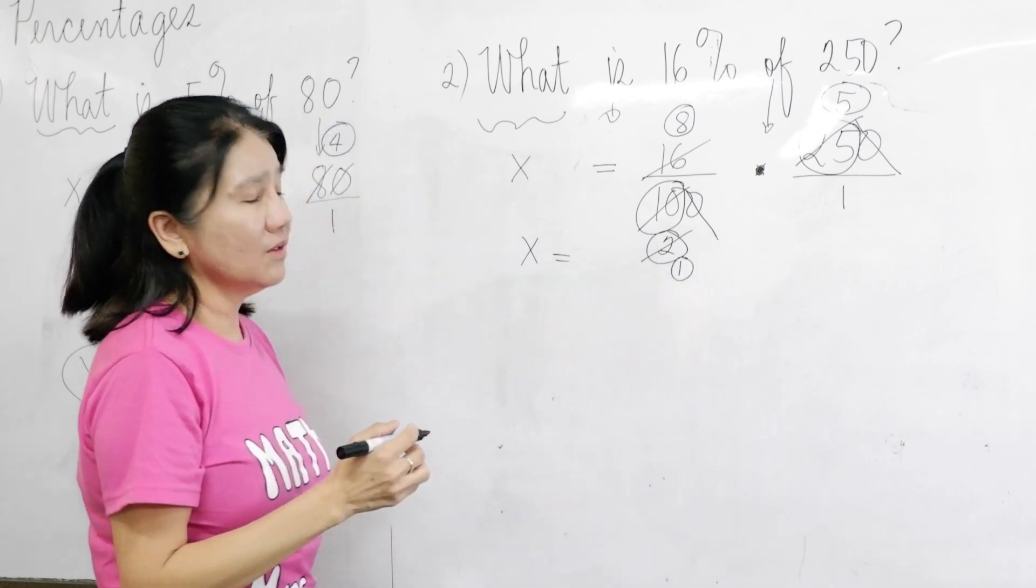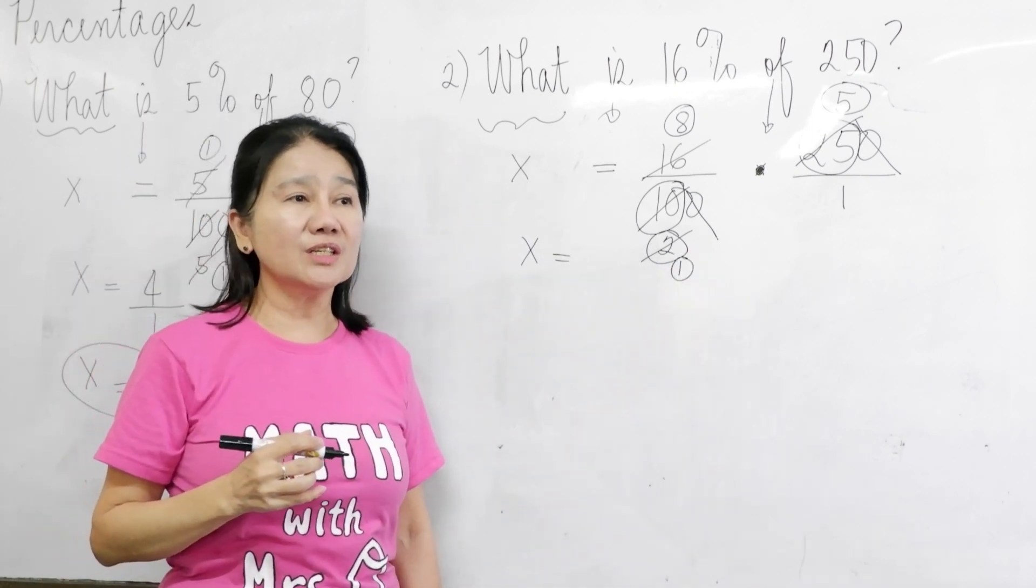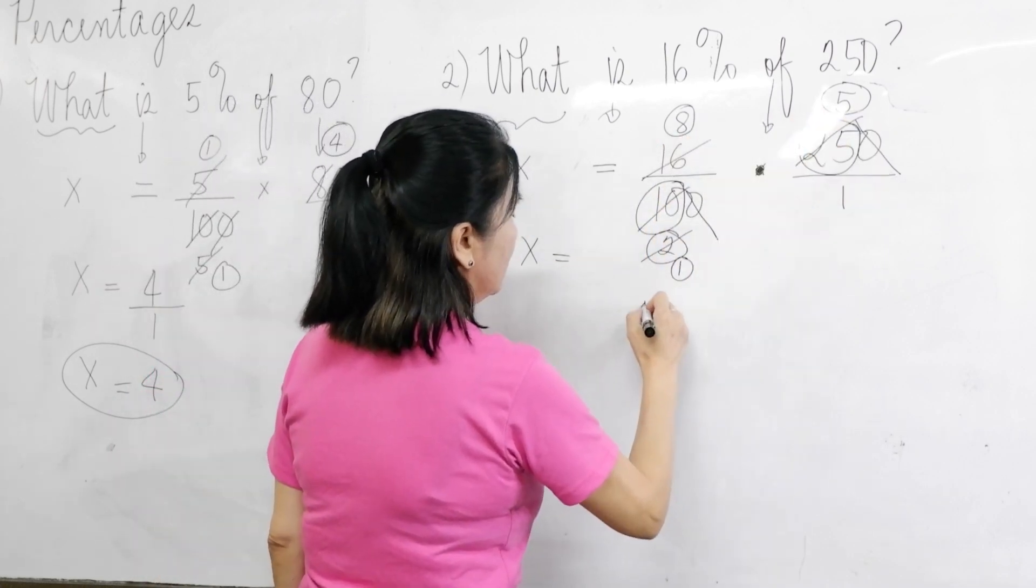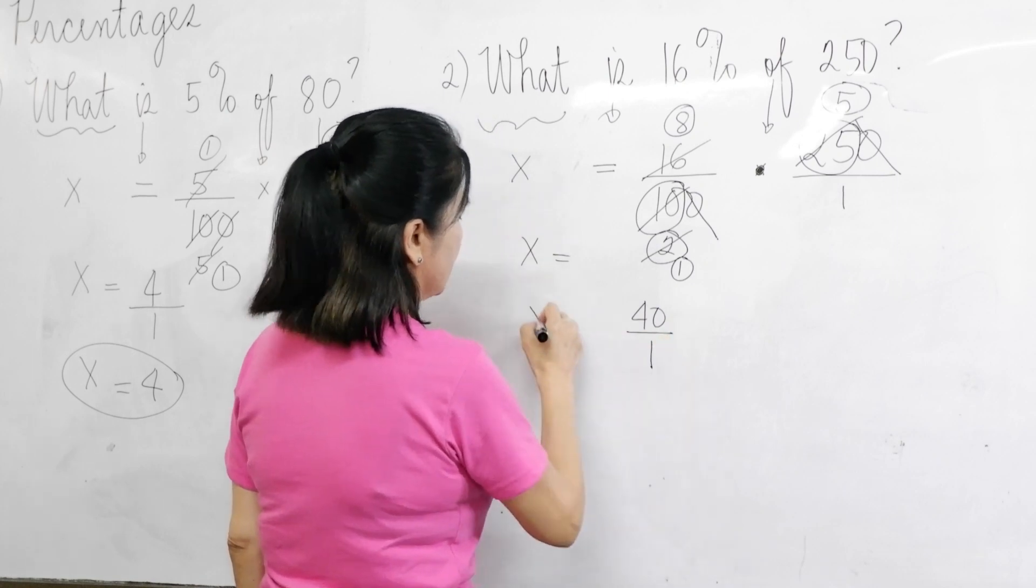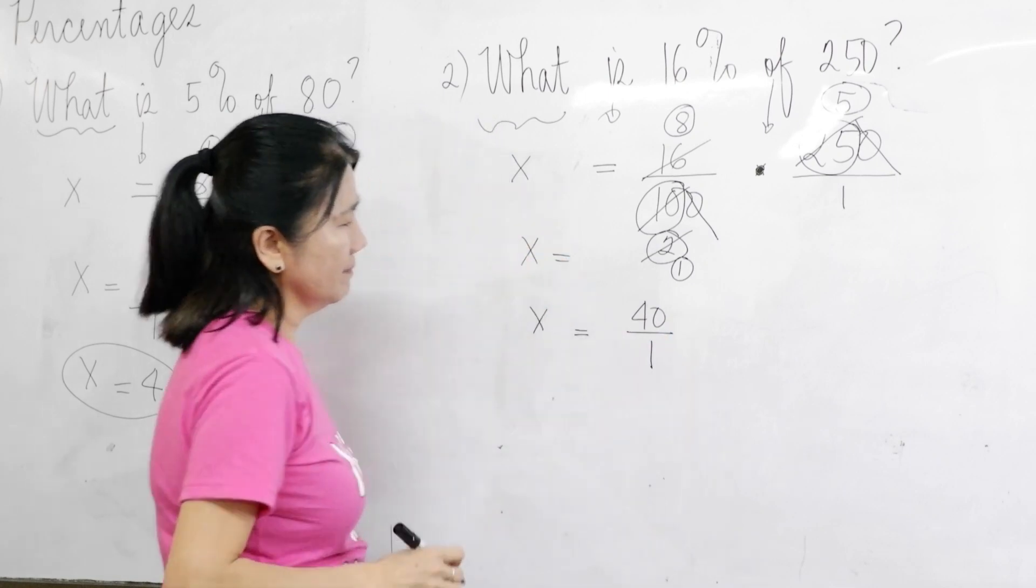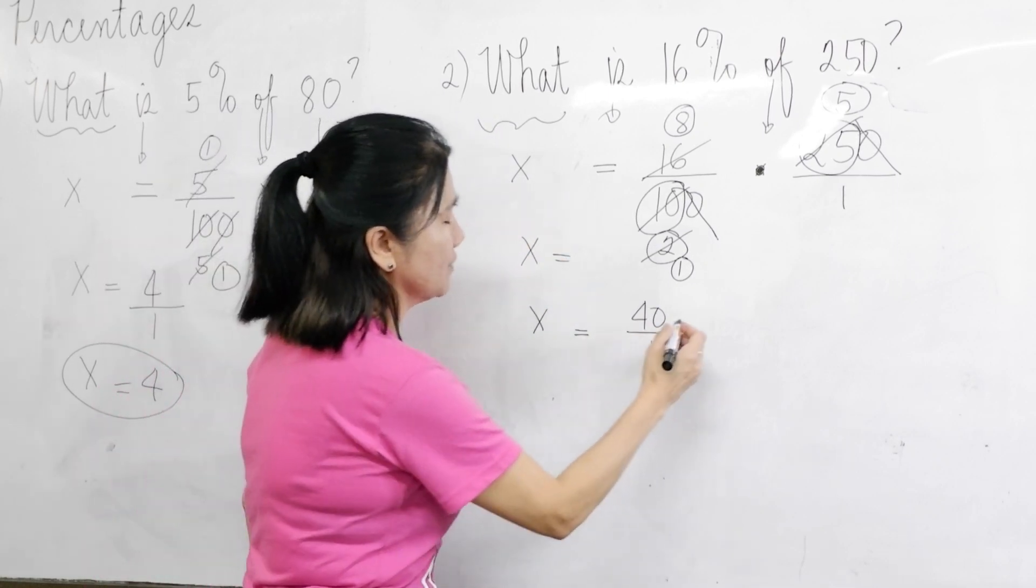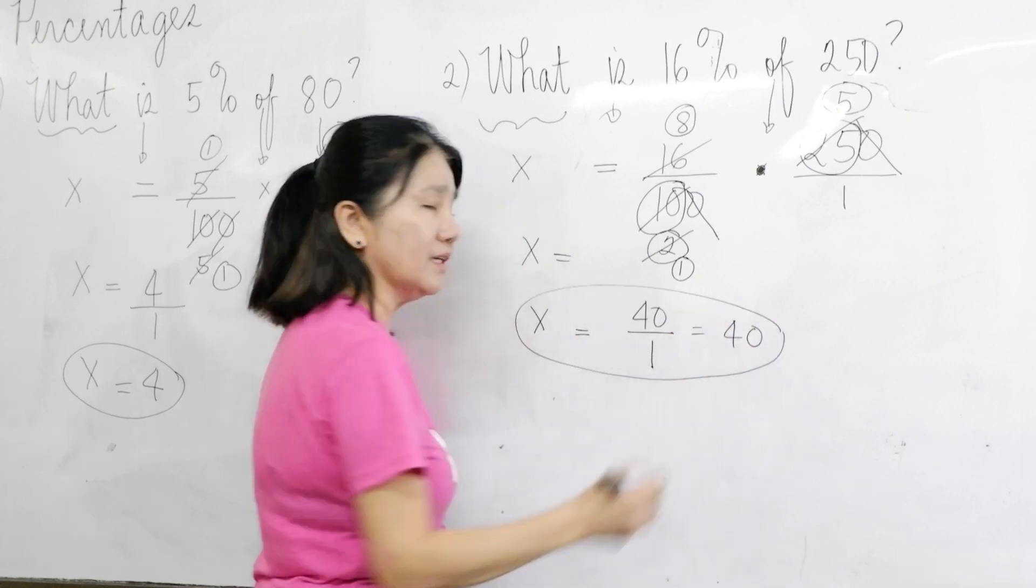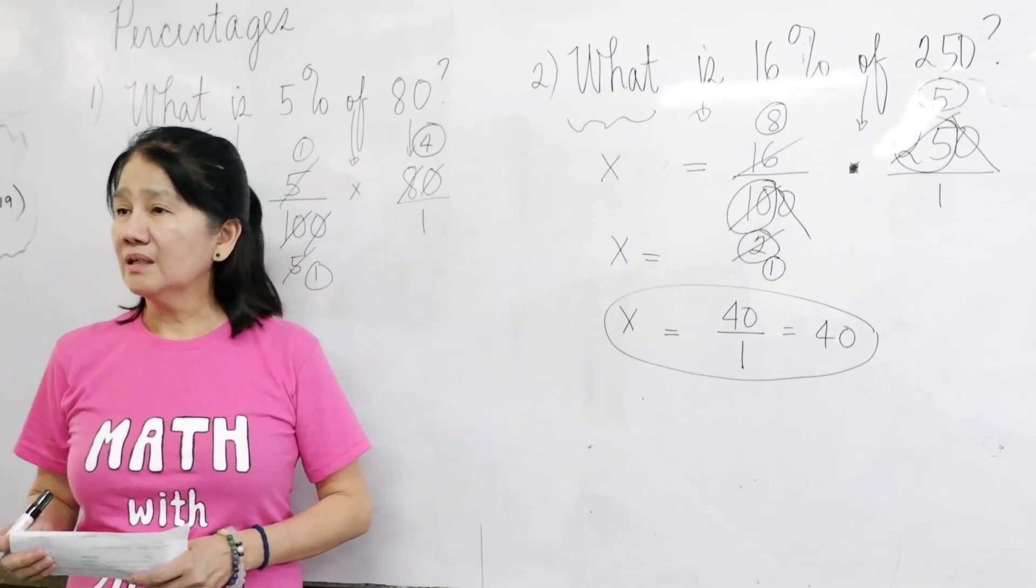Therefore, what is our final answer? Gwen? 40. Yes. 8 times 5 is 40 over 1. So we just write down here. X equals 40 over 1 which is equal to 40. Okay. Is it crystal clear? Yes.